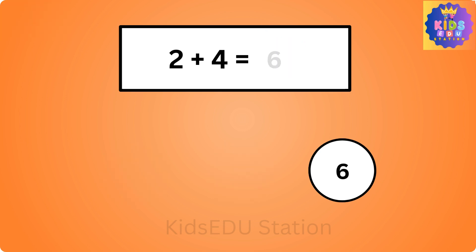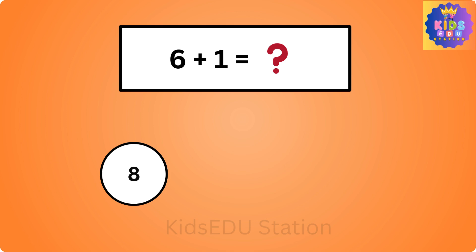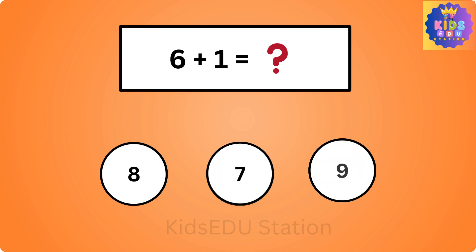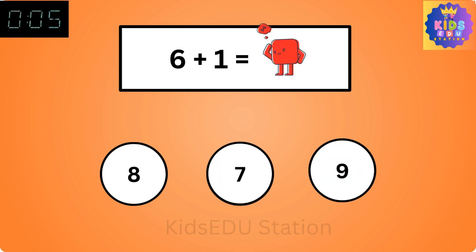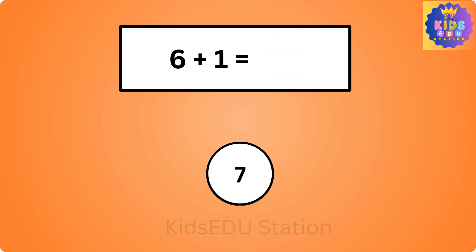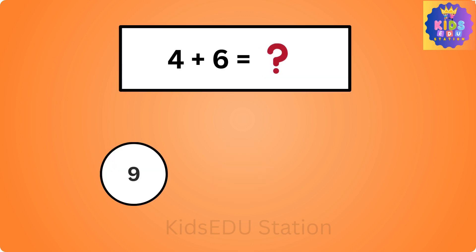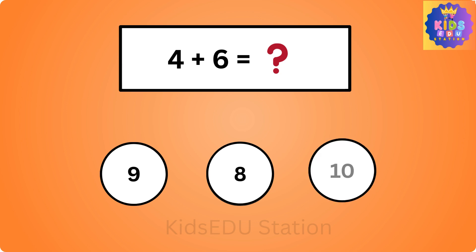2 plus 4 is 6. What is 6 plus 1? 8, 7, 9. 6 plus 1 is 7. What is 4 plus 6? 9, 8, 10.